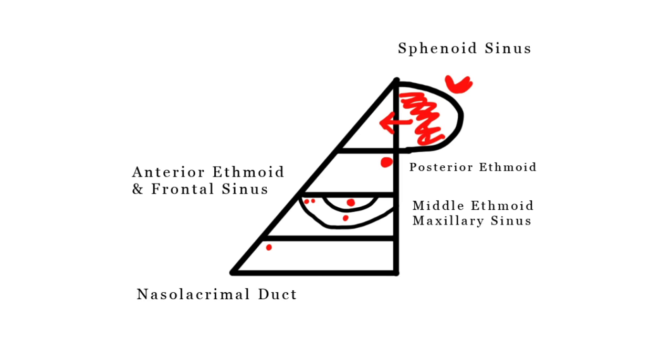Our middle ethmoid sinus draining onto the ethmoid bulla. Our maxillary sinus draining into the semilunar hiatus, and our frontal and anterior ethmoid sinuses draining into the anterior part of the semilunar hiatus. And finally, the nasolacrimal duct in the inferior meatus.